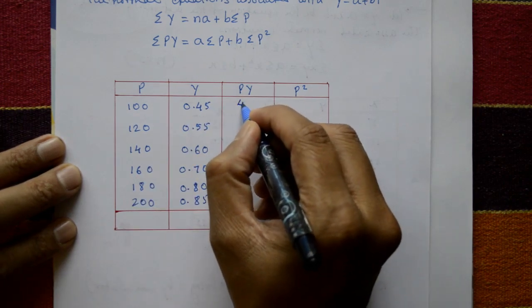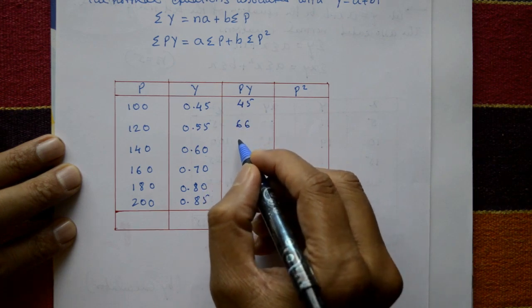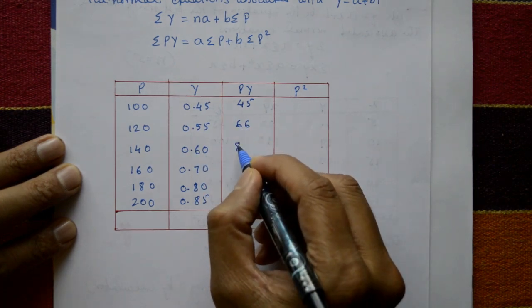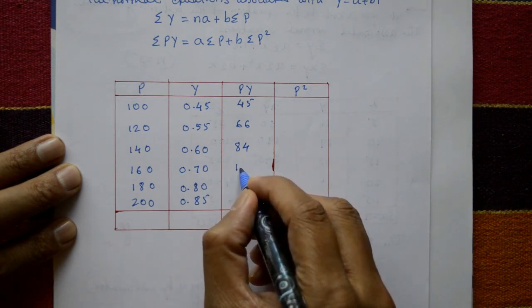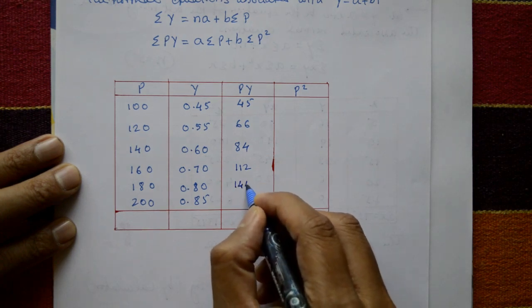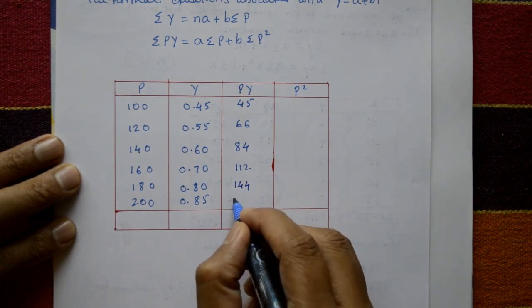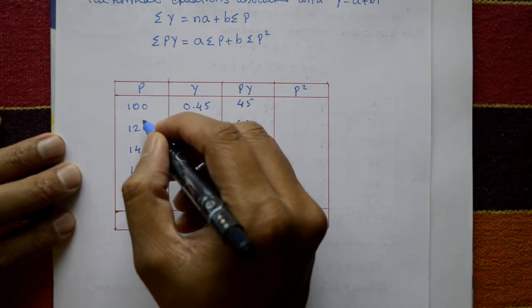Now we get: this is 45, this one is 66, 84, 100 and 12, and 144, and this one is 170.